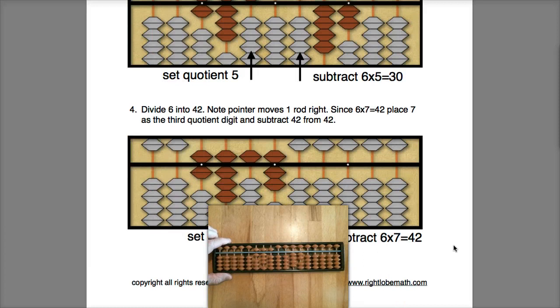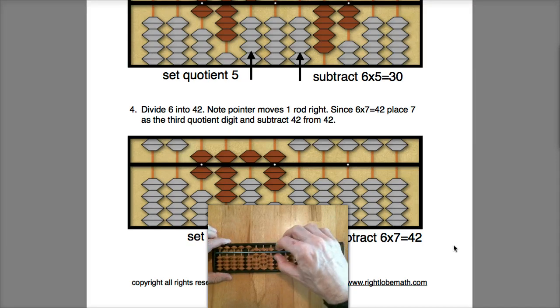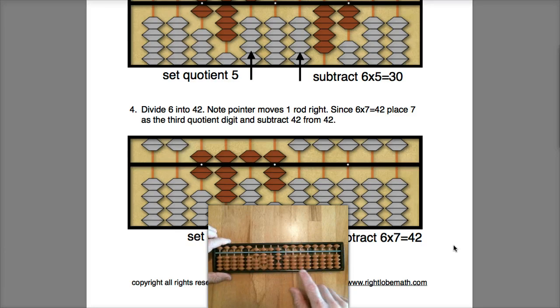Okay, well to finish up our problem we will take 6 into 42. Well, 6 times 7 is 42, so I can clear the 42 there and I see that I have a final answer of 857. So there was a quick introduction to long division on the Soroban and I hope that's all clear and good luck practicing.